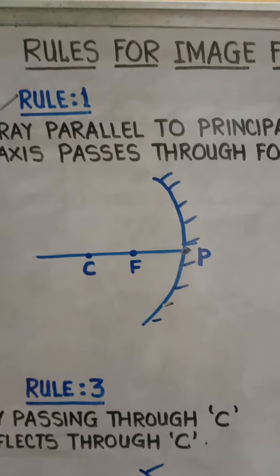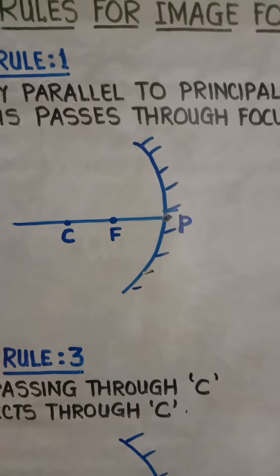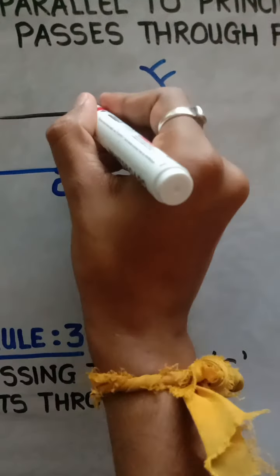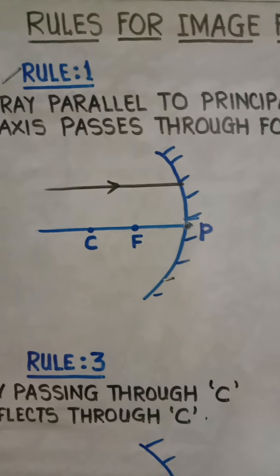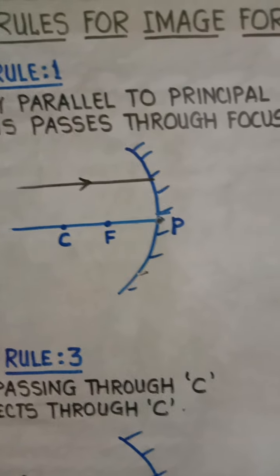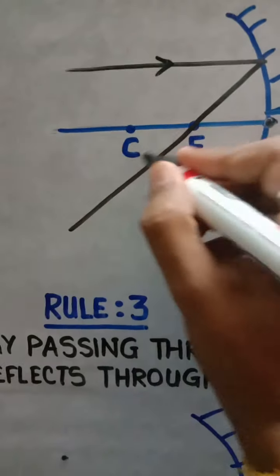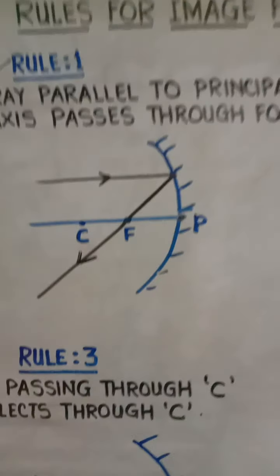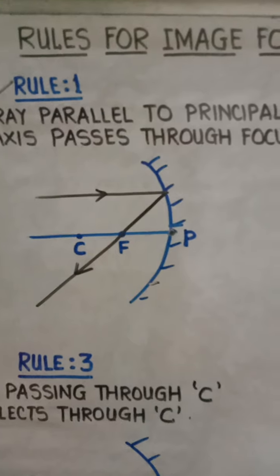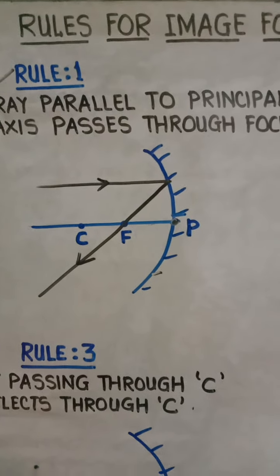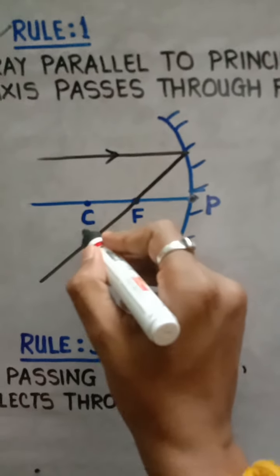Rule number one: if an incident ray is coming parallel to the principal axis, after striking the mirror it should pass through the focus. This is your incident ray coming parallel to the principal axis — after hitting the mirror it passes through the focus. Make sure to draw the incident ray and reflected ray properly.